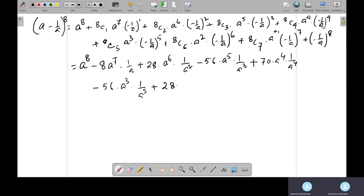Then 8C6 is 28, A to the power 2 times 1 by A to the power 6, negative, 8C7, 8C7 means it is 8, A to the power 5, times 8C6 times 1 by A to the power 7, minus 1 to the power 8, 8C6 is even number, so plus, 1 by A to the power 8. Okay, do you have any doubt?